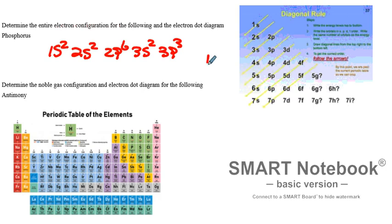The dot diagram, of course, is given to us by the s2p3, which is 5 dots, 2 together and 3 separate. All right, last, we'll do the noble gas configuration. And this would be for antimony. We're going to go up and over. We got the noble gas. That's krypton.